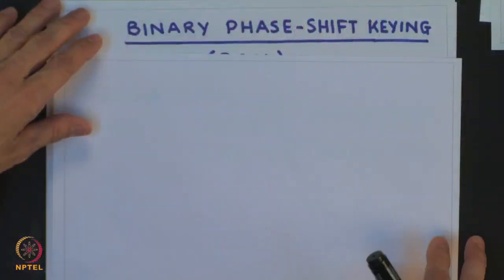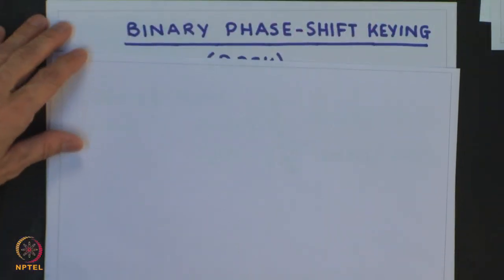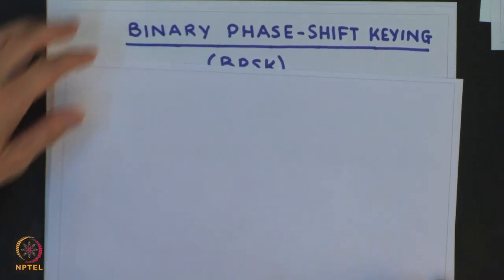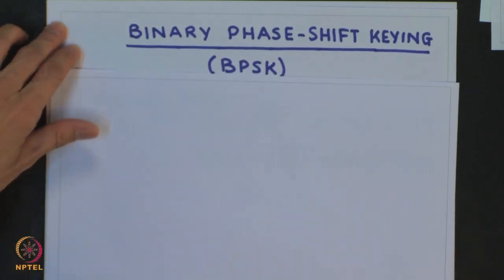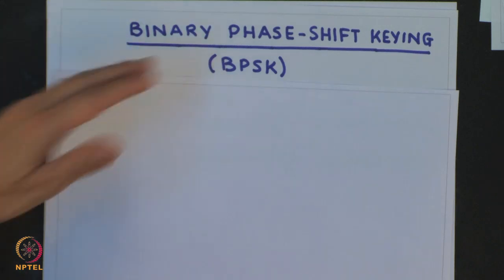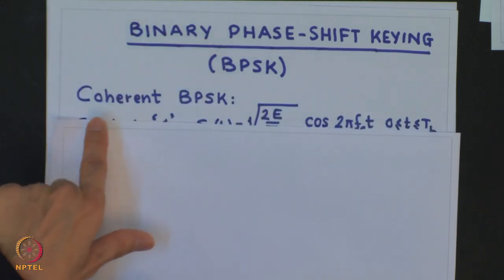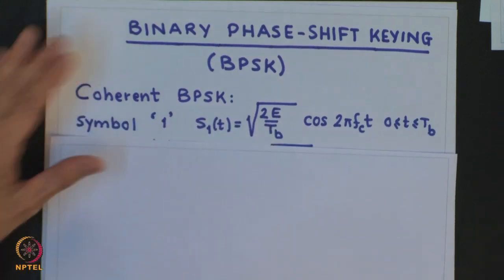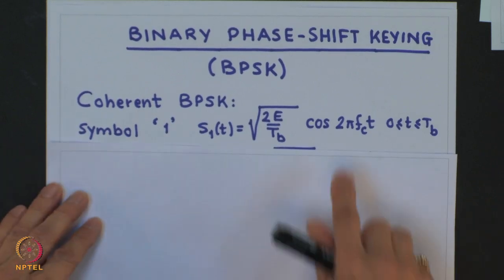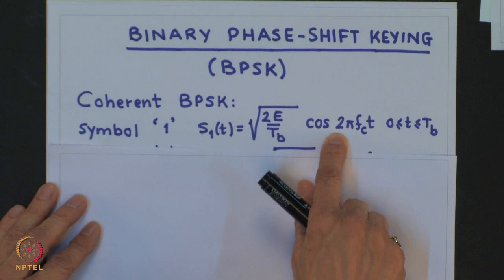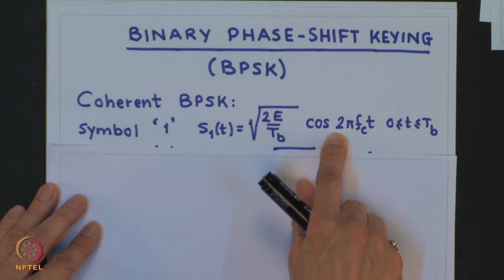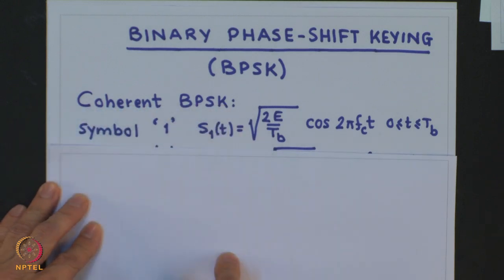Another popular modulation scheme is what is known as binary phase shift keying (BPSK). This scheme is used in modern communication systems such as satellite links, wideband microwave radio relay stations, and so on. It is very power efficient in terms of signal power. We will be talking about coherent BPSK, where I assume that I know the phase of my carrier signal. Without loss of generality I assume the carrier phase to be equal to 0.